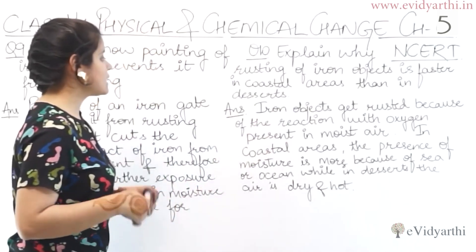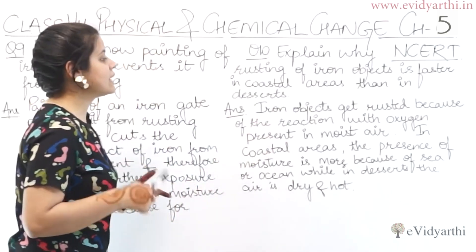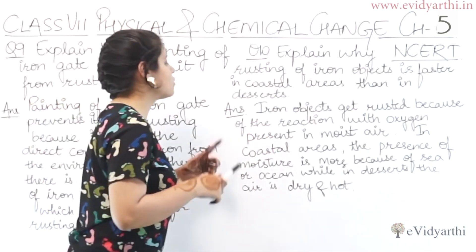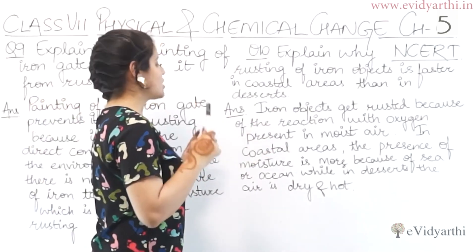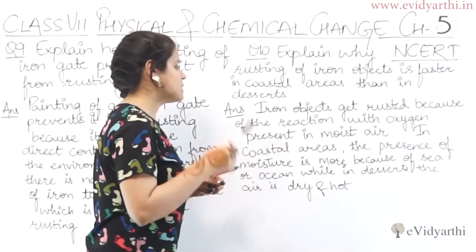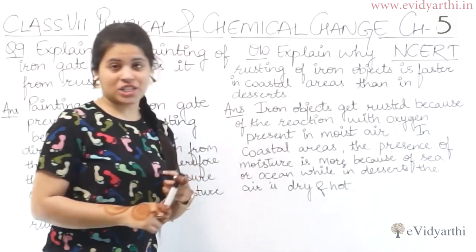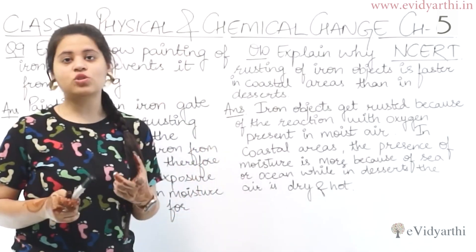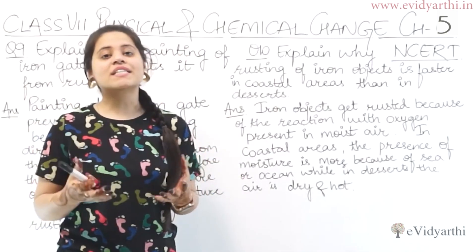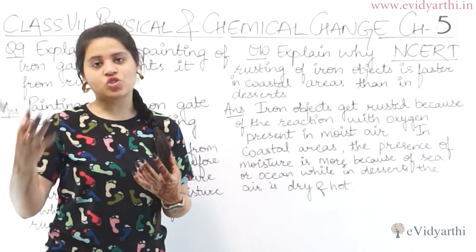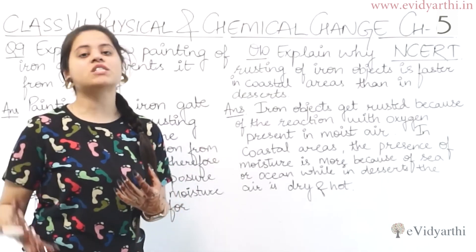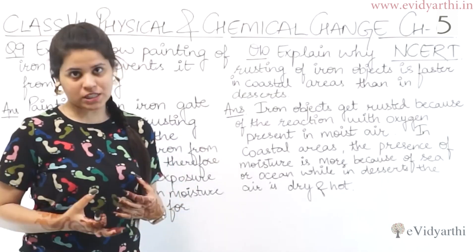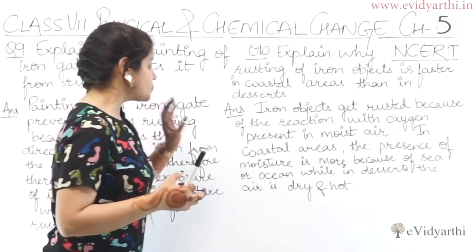Iron objects get rusting because of the reaction with oxygen present in the moisture. The rusting of iron happens due to the moisture present in the air.